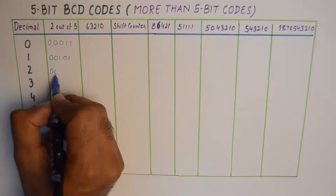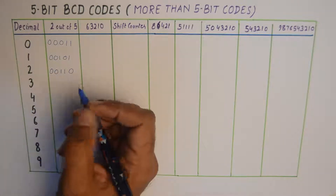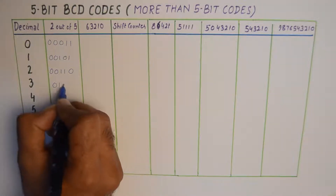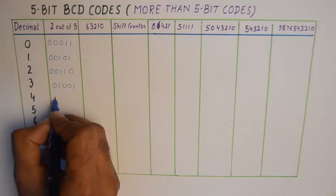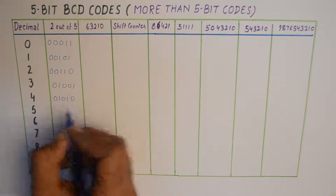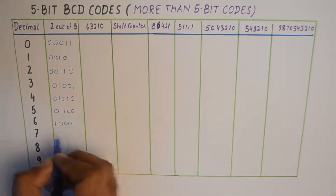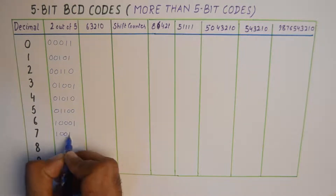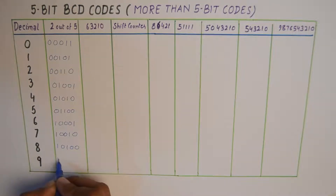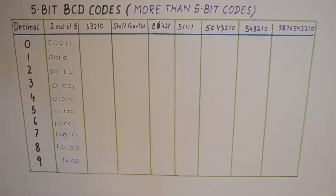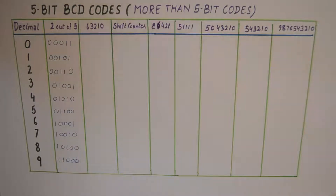I'll write down codes for the entire decimal set. It's a pretty unique code which could be used as a cipher code to transmit data, because all the codes are uniquely identified as having only 2 bits as 1.